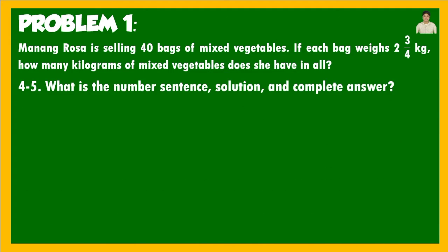Let's have the next steps: the number sentence, solution, and complete answer. The number sentence is: 40 × 2 and 3 fourths = n. For the solution, since we are multiplying a whole number by a mixed fraction, we need to convert the mixed number 2 and 3 fourths into an improper fraction. We multiply the whole number by the denominator: 2 × 4 = 8, then add the numerator 3: 8 + 3 = 11, giving us 11 over 4.